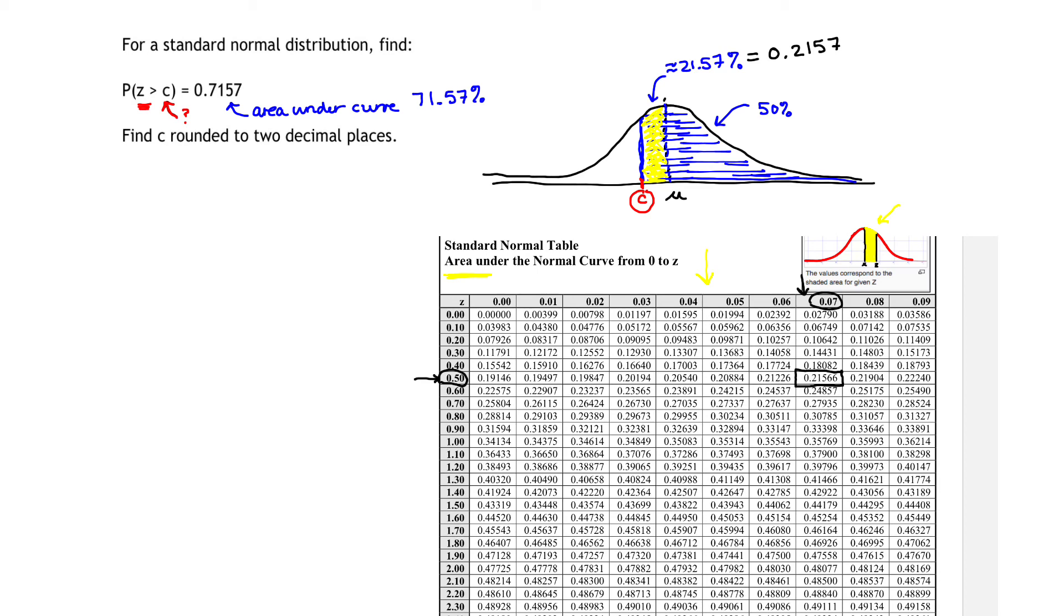So that means that C is 0.57, but because we're left of the mean, it has to be negative. That tells me that if I'm looking for all the area greater than that value, it's going to correspond to 71.57%. So that means C, rounded to the nearest two decimal places, is negative 0.57.